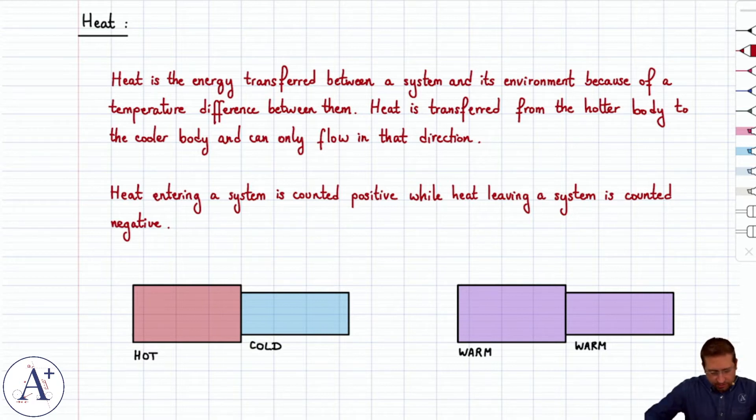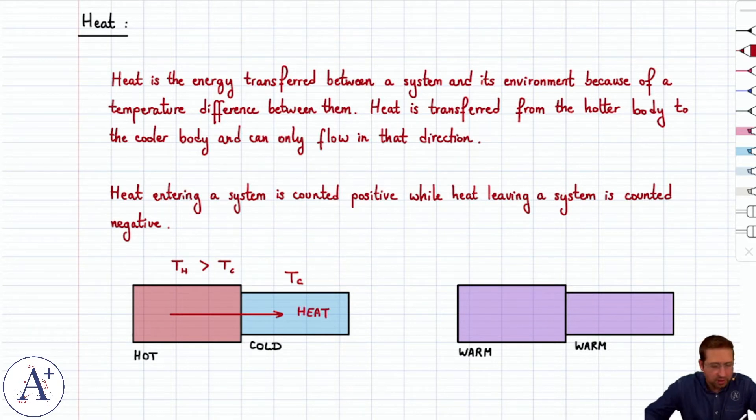In the example below, if we have a temperature T-hot or TH that is greater than the temperature TC of this object, then heat will flow from left to right, from the hot body to the cold body.